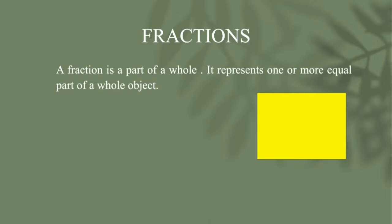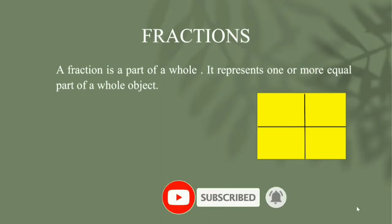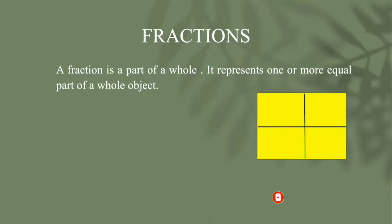Let's go for an example. This is a yellow color rectangle box. We can divide the box into 4 parts. We can change one part to red color. So this rectangle box fraction is 1 by 4.